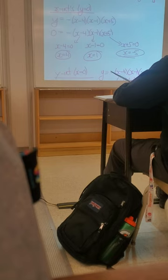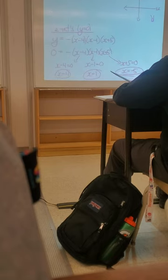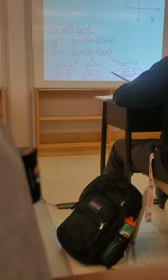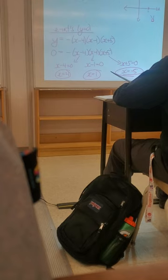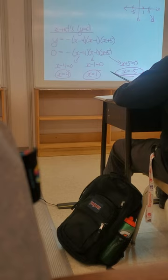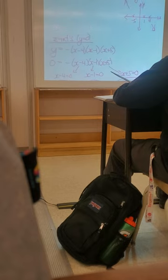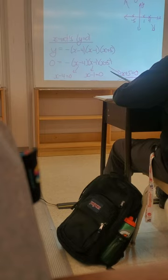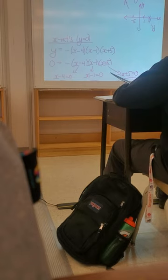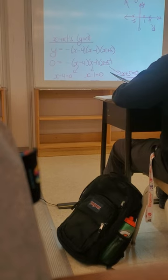Fantastic. So we know where those x-intercepts are going to be — there's going to be one over here at 4, another one at 1, and another one over here at negative 5. We've got our x-intercepts, and we also know the end behavior: up to the left, down to the right. So now we've got to connect these up. At this point, there's really only one way that this could happen.